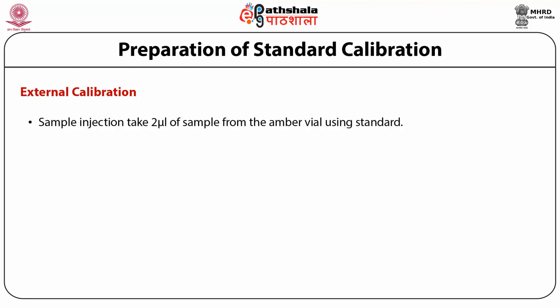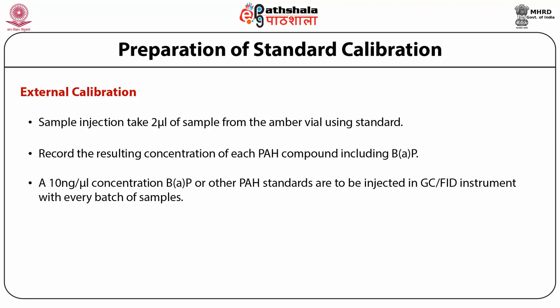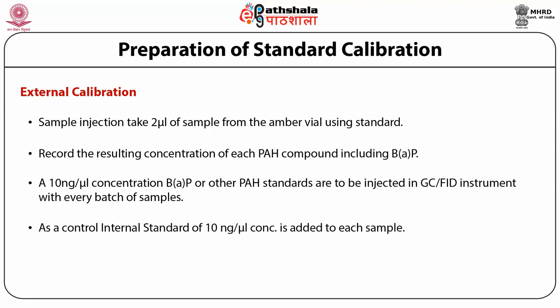Sample injection is carried out by taking 2 microlitre of sample from the amber vial using a standard gas-tight syringe and injecting into the capillary GC-FID instrument for analysis. Record the resulting concentration of each polyaromatic hydrocarbon compound including benzopyrene. A 10 ng per microlitre concentration of benzopyrene or other PAH standards is injected in GC-FID with every batch of samples as a control. An internal standard of 10 ng per microlitre concentration is added to each sample prior to analysis when internal calibration is used.